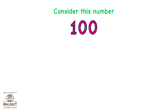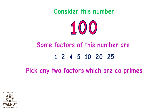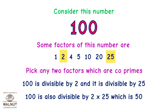Consider the number 100. Some factors of this number are 1, 2, 4, 5, 10, 20, 25. Pick any two factors which are co-primes: 2 and 25. 100 is divisible by 2 and it is also divisible by 25. Therefore, 100 is also divisible by 2 × 25, which is 50.